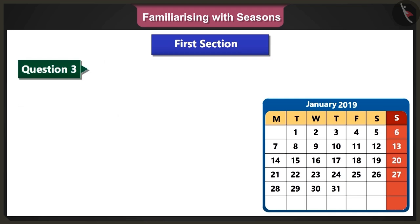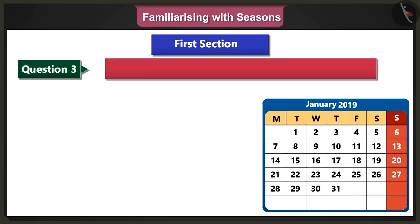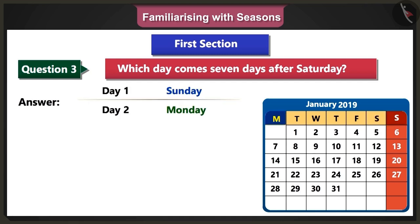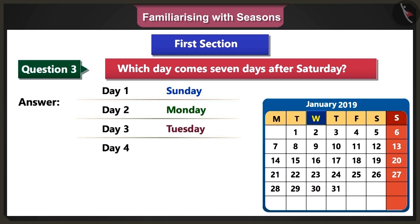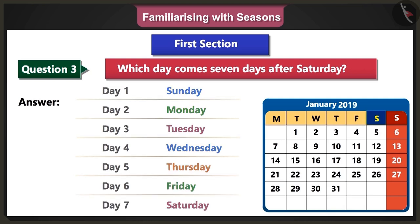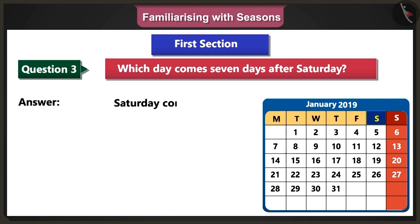Third question: which day comes seven days after Saturday? Answer: after Saturday comes Sunday, Monday, Tuesday, Wednesday, Thursday, Friday, and Saturday. So Saturday comes again after seven days.